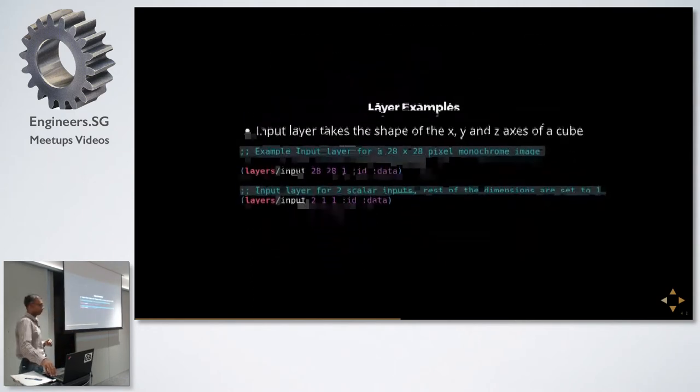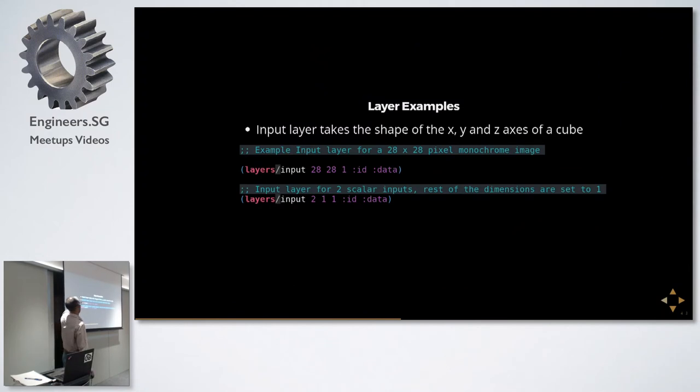Here's how we define an input layer for example. The input layer takes x, y and z axis of a cube. This is a reference to loading an image which has x, y and z axis. So if we have an image that is 28 pixels by 28 pixels, you'll give 28 and 28 for x and y. If it's monochrome, it's got just one layer, that's one. If it's color, it'll have three layers. If it's got depth, it'll probably have four or maybe five layers.